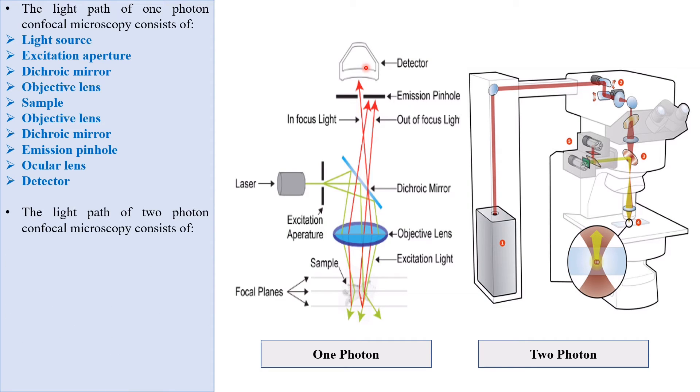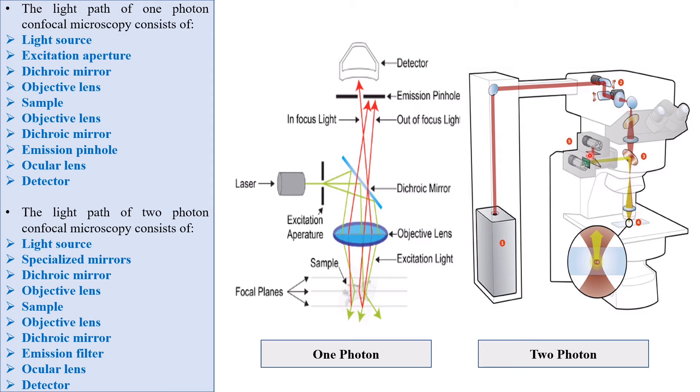The light path of two photon confocal microscopy consists of light source, specialized mirrors, dichroic mirror, objective lens, sample, again objective lens, dichroic mirror, emission filter, and detector.